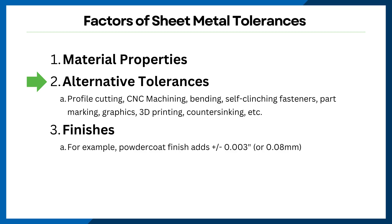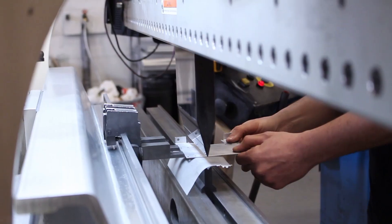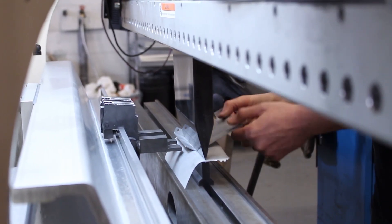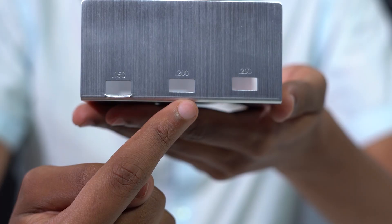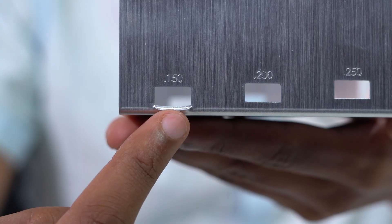Aside from material tolerances, you need to also consider tolerances for profile cutting, CNC milling, bending, self-clinching fasteners, finishes, part markings, graphics, 3D printing, and countersinking. For instance, if bending is going to be involved, keep in mind that parts with complex features or tight bends can be trickier to produce with exact precision. Plus, adding holes or cutouts too close to the edges or bends can cause deformation or misalignment.